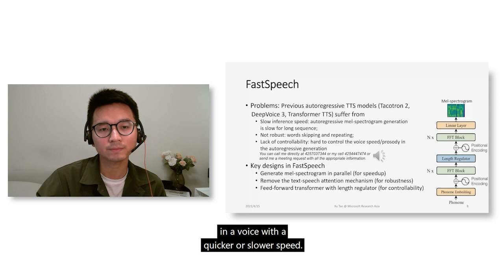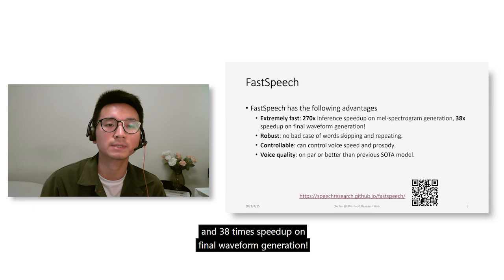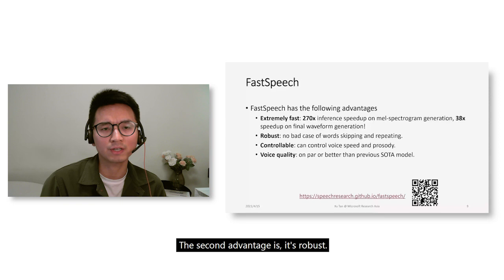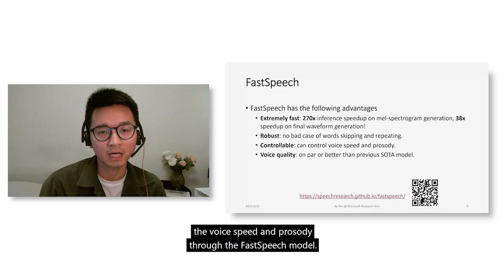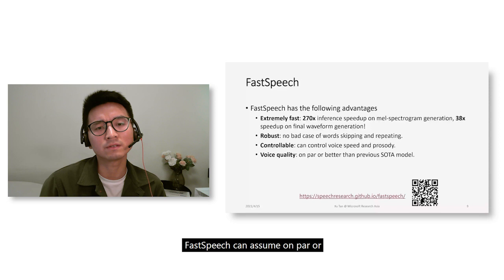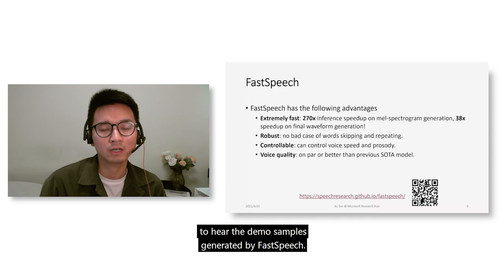As a summary, FastSpeech has the following advantages. First, it is extremely fast — FastSpeech achieves 270 times inference speedup on mel spectrogram generation and 38 times speedup on final waveform generation. Second, it is robust — no word-skipping or repeating issues. Third, it is controllable — we can control voice speed and prosody. Finally, FastSpeech achieves comparable or better voice quality than previous state-of-the-art TTS models.